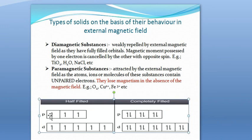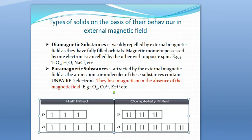This unpaired electron has a magnetic moment of its own and there is no other electron to cancel it out, so there is a net magnetic moment. We can calculate the net magnetic moment depending on the number of unpaired electrons from their electronic configuration. One important point is that these substances lose their magnetism in the absence of a magnetic field — they are magnetic only in the presence of an external magnetic field. Examples include the oxygen molecule, copper(II) ion, and iron(III) ion.